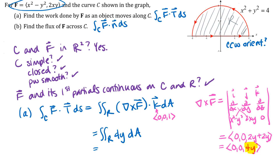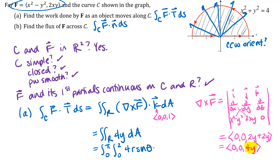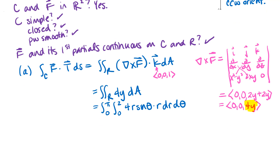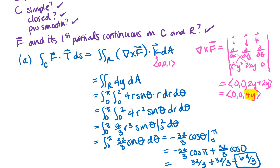Setting up and evaluating the double integral: substituting y = r sin θ and dA = r dr dθ, integrating with respect to r, plugging in limits, integrating with respect to θ, and plugging in limits gives us 64/3. One important note: some students confuse parametrizing the curve (where r = 2 is fixed) versus integrating over the region inside the curve (where r is a variable going from 0 to 2).